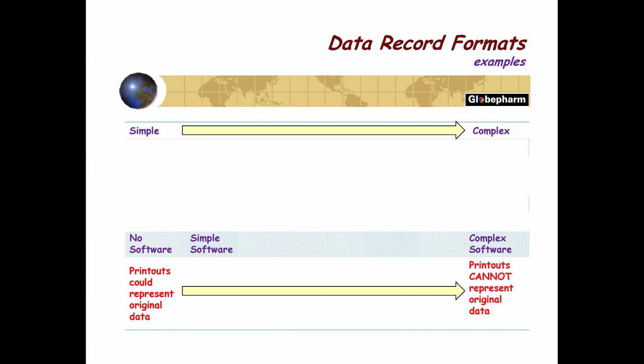At the most complex end, the printout itself doesn't represent the original data — the original data is captured on the hard disk inside the computer. Every time you make a photocopy on a big machine, there's a hard disk in there keeping a copy of what you copied. Police could access that ten years from now. So that's the original data; the printout is a facsimile.